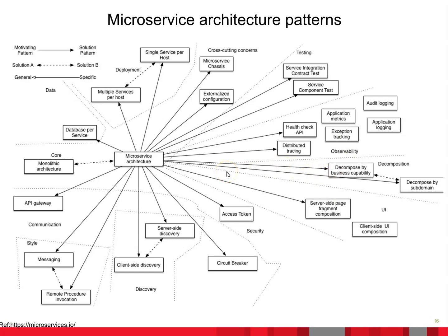When implementing a microservices-based architecture, you really need to divide your monolithic application into different modules. That's why you need to decompose by business capabilities. It's a good place to start — check what capabilities you have right now to implement a microservices-based architecture.